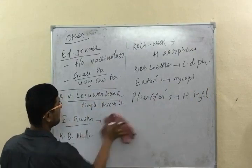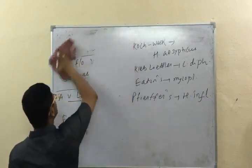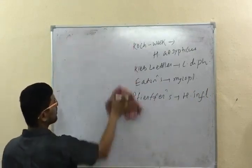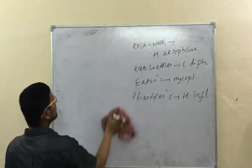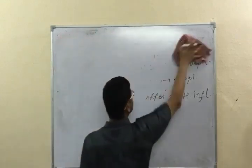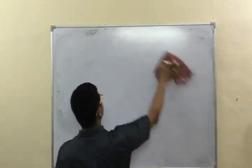Haemophilus influenzae is called Pfeiffer's bacillus. There are various microorganisms named after their discoverers. This is all about the history of microbiology. Next, I will tell you a bit about bacterial taxonomy.